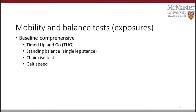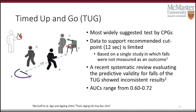Our exposure variables were four mobility and balance tests from the comprehensive cohort at baseline: the Timed Up and Go (TUG), the standing balance test (also known as the single leg stand test), the chair rise test, and gait speed.